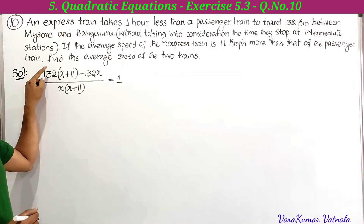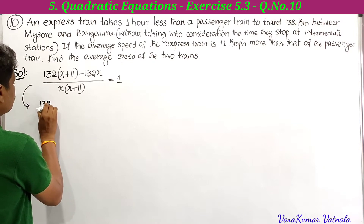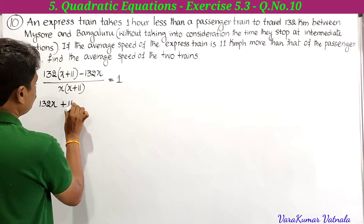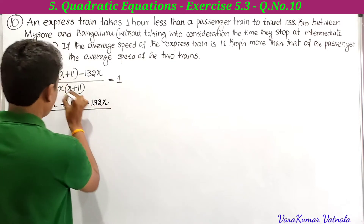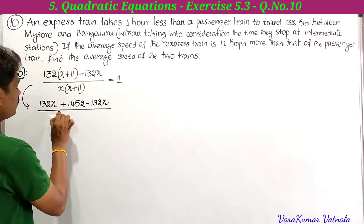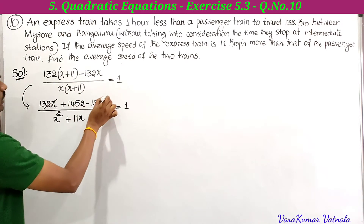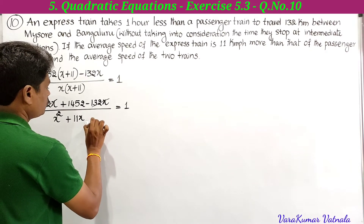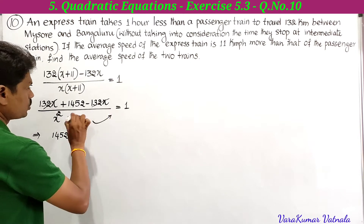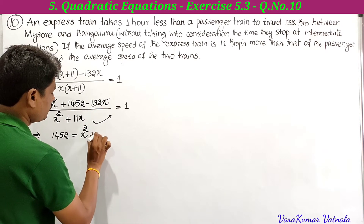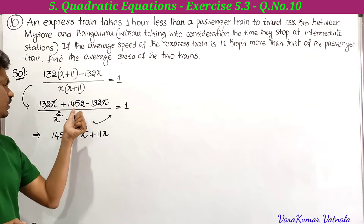Multiplying both sides by x(x plus 11): 132(x plus 11) minus 132x equals x(x plus 11). Expanding: 132x plus 1452 minus 132x equals x squared plus 11x. The 132x terms cancel, leaving 1452 equals x squared plus 11x.